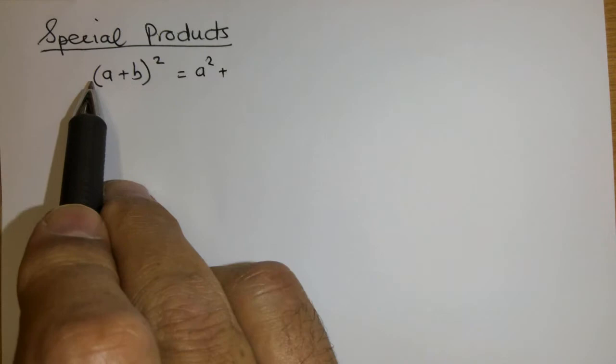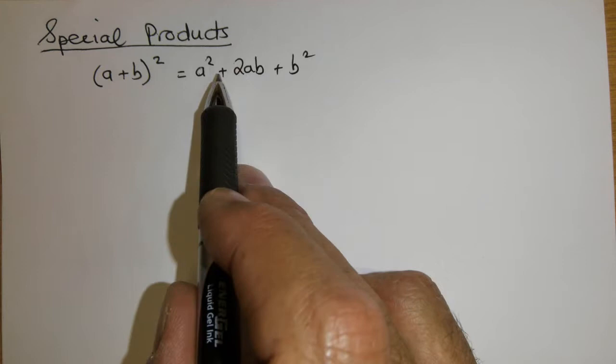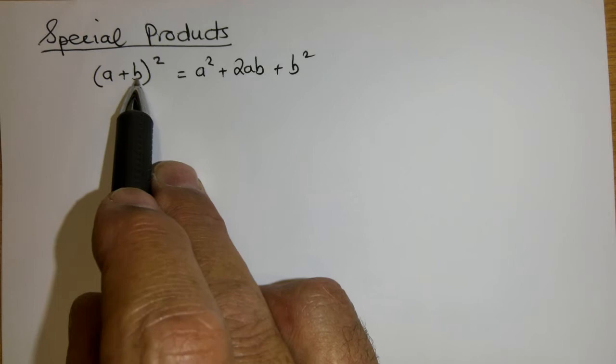It's a squared plus twice this times that plus b squared. So the a squared and the b squared are there but what I want to draw your attention to is that there's a middle term. And the middle term is twice this multiplied by that.